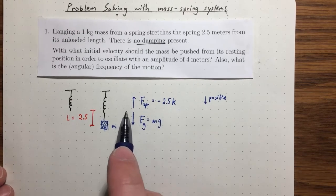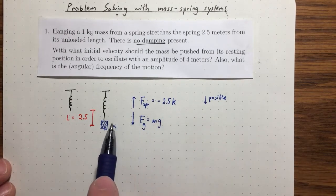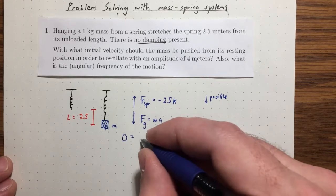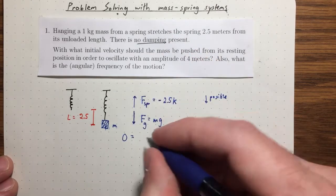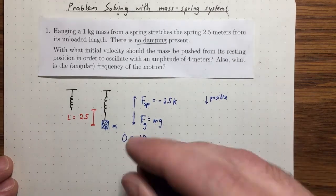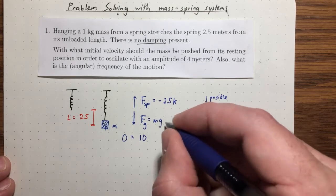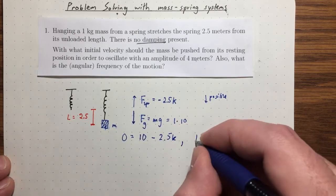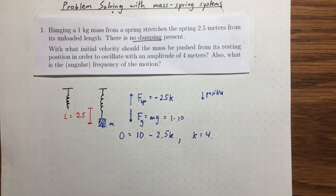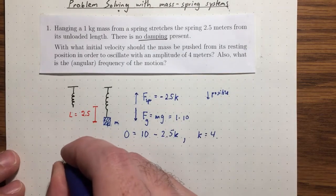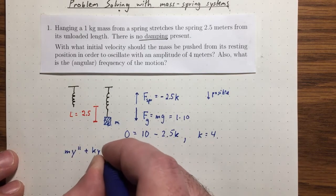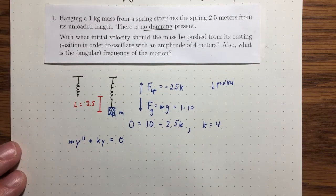Taking downward as the positive direction, we have gravity mg minus the spring force 2.5k. We know the net force is zero because the mass is just sitting there — it's not accelerating. So zero equals mg, with m=1 and g≈10, giving us 10 minus 2.5k equals zero, which tells us k equals 4. Now we can write down our differential equation. Since there's no damping, it's just m·y'' + k·y = 0, with no y' term. That's our differential equation for this mass spring system.